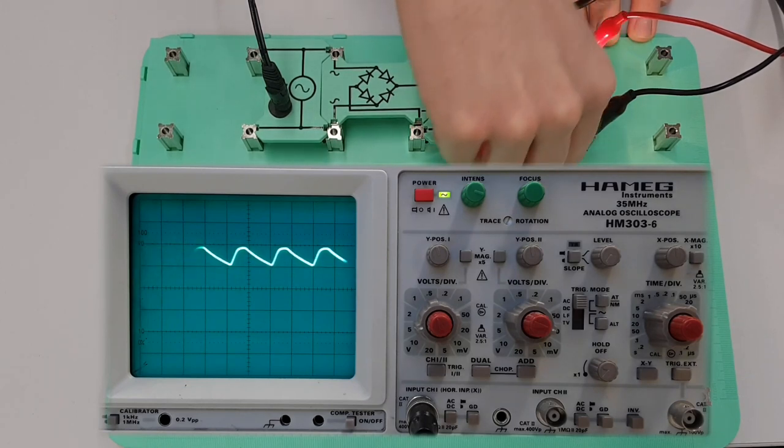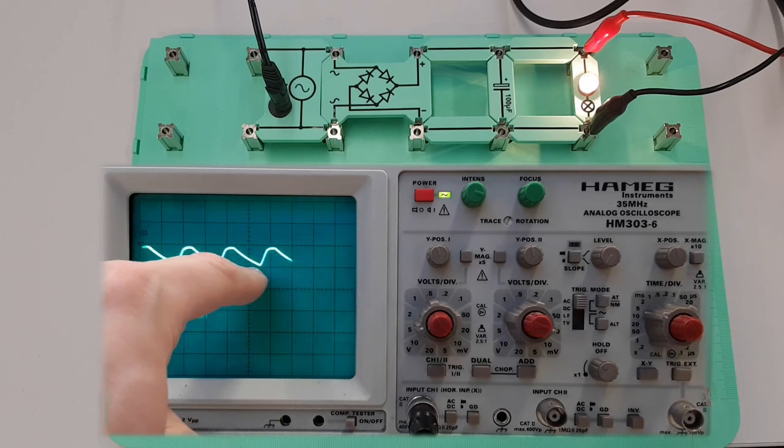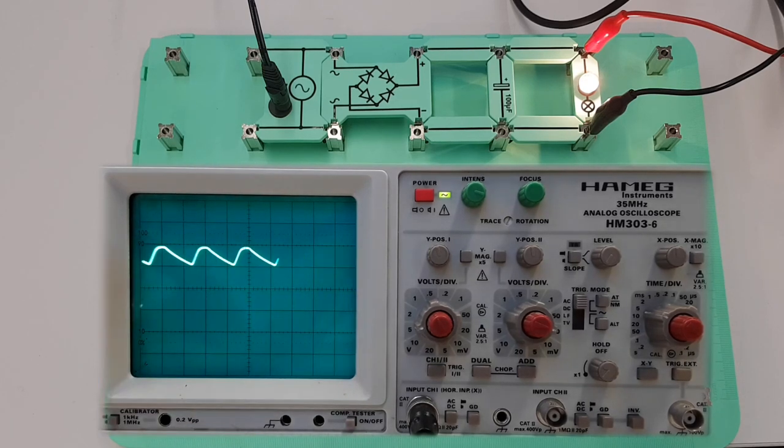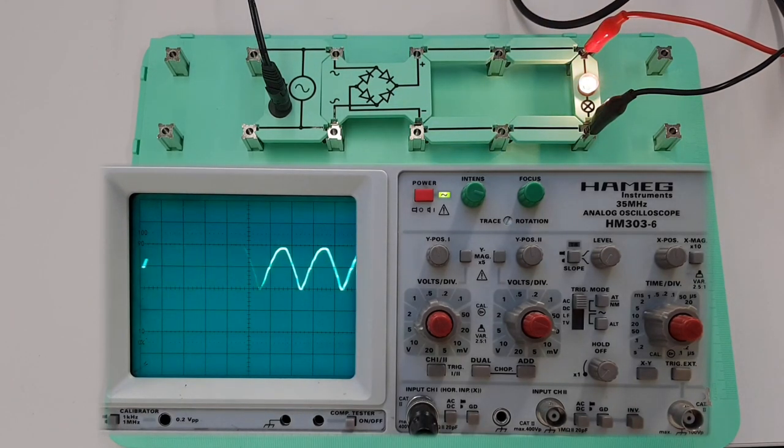So look at that now. We're well above that first line there now. We can see that the DC waveform is getting smoother and smoother, and then we'll introduce the biggest capacitor that we've got in this kit.